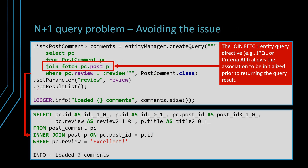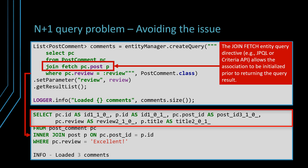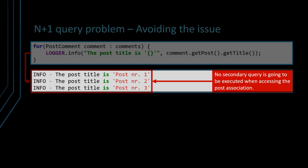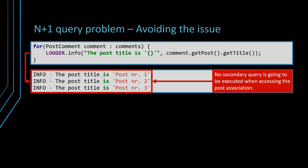To avoid the N+1 query issue, we can use the join fetch clause as illustrated by the following JPQL query. The join fetch clause instructs Hibernate that the Post property of the PostComment entity needs to be fetched when executing the underlying SQL query. We can see that the SQL query contains a join clause for the parent Post table, and the select clause includes the Post table columns in the query result set. Now when iterating the PostComment entities and printing the associated post title, we can see that no additional SQL query is executed, since the Post entities have been loaded when fetching the PostComment entities. Therefore, the join fetch clause can help us avoid the N+1 query issue by loading multiple entity associations with a single SQL query.